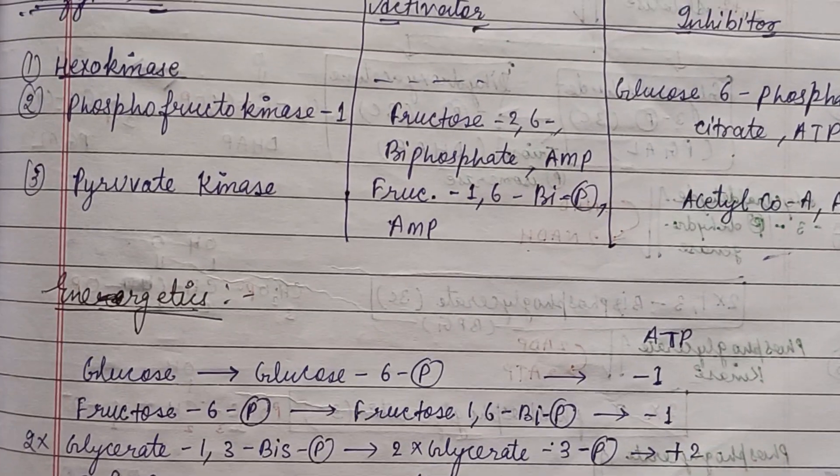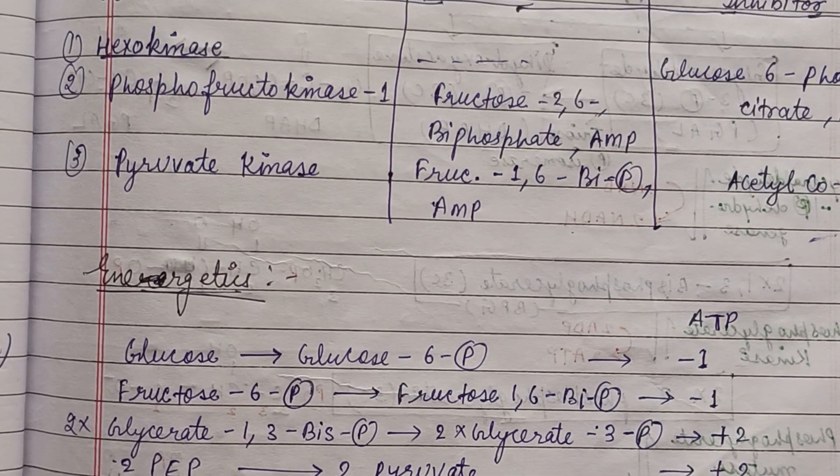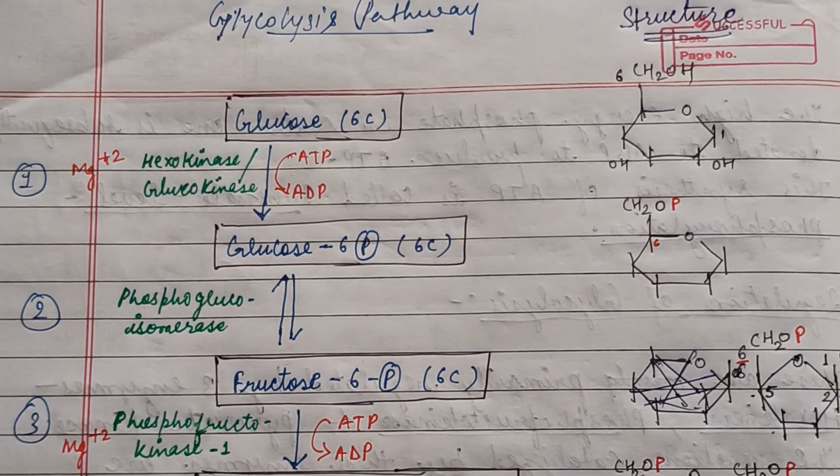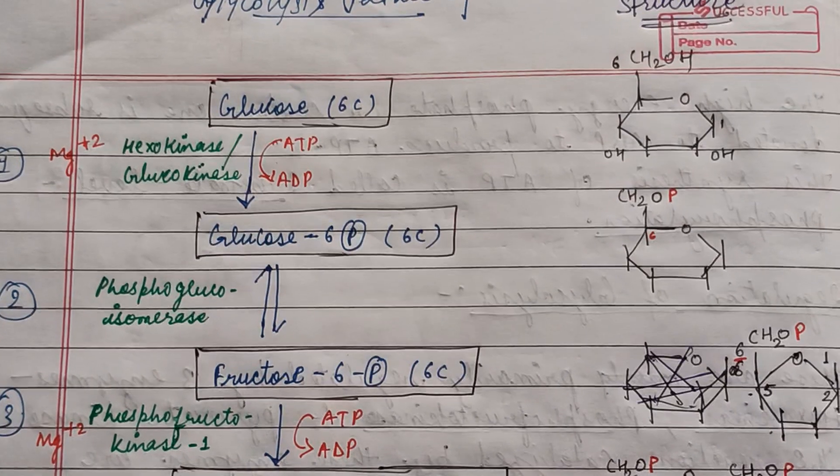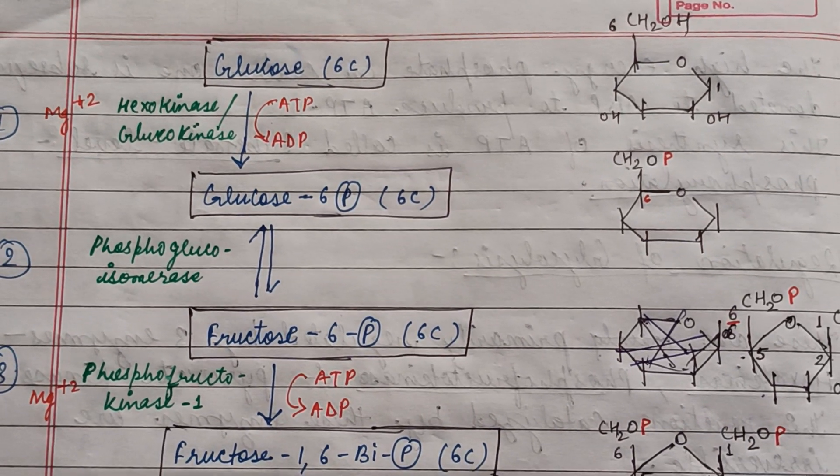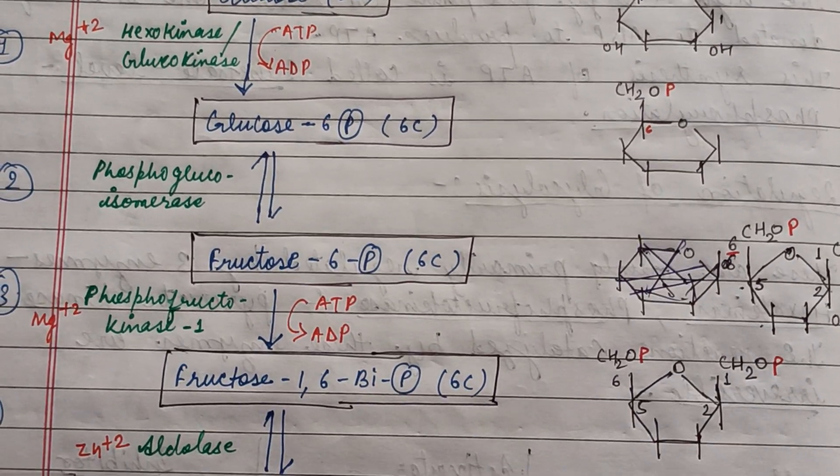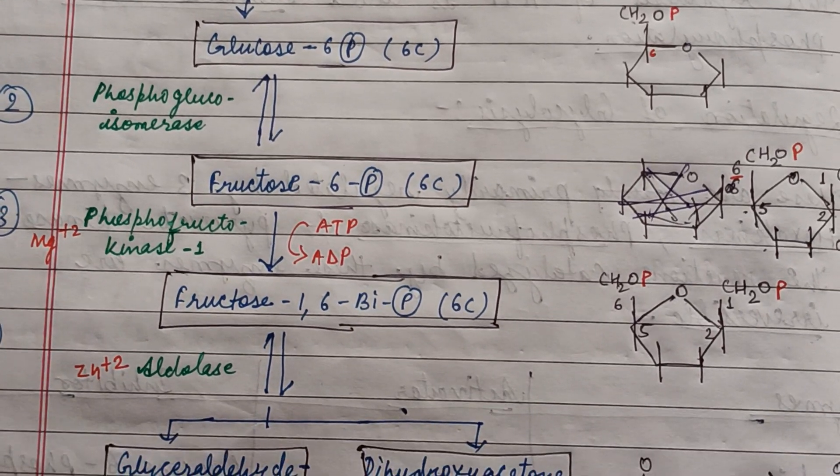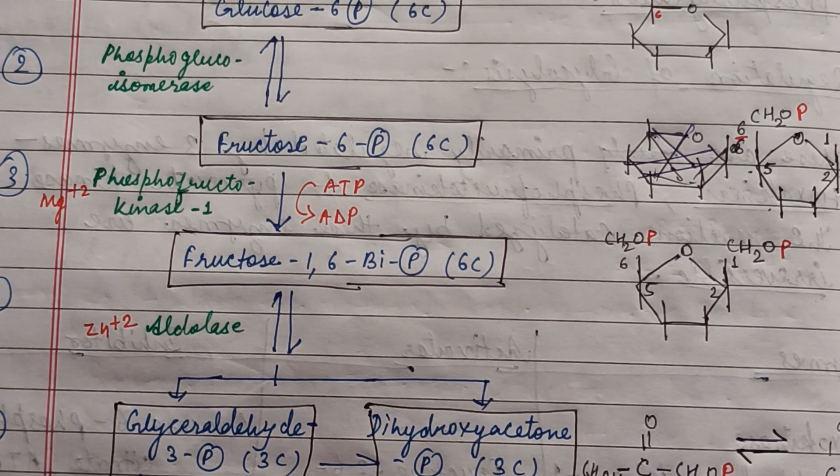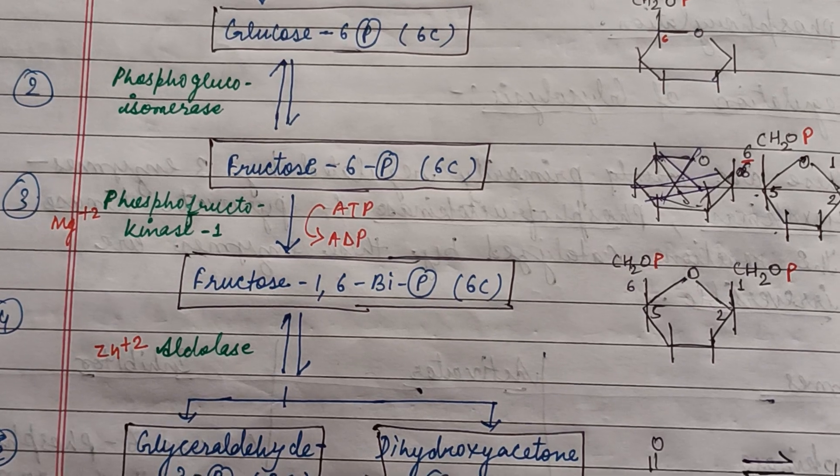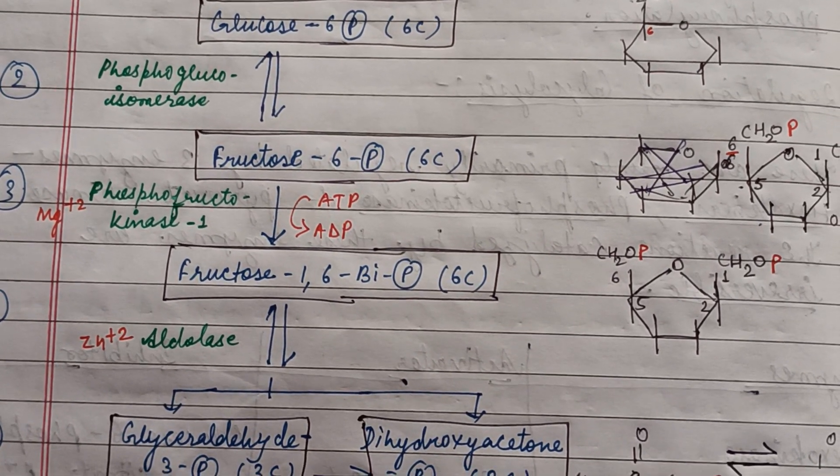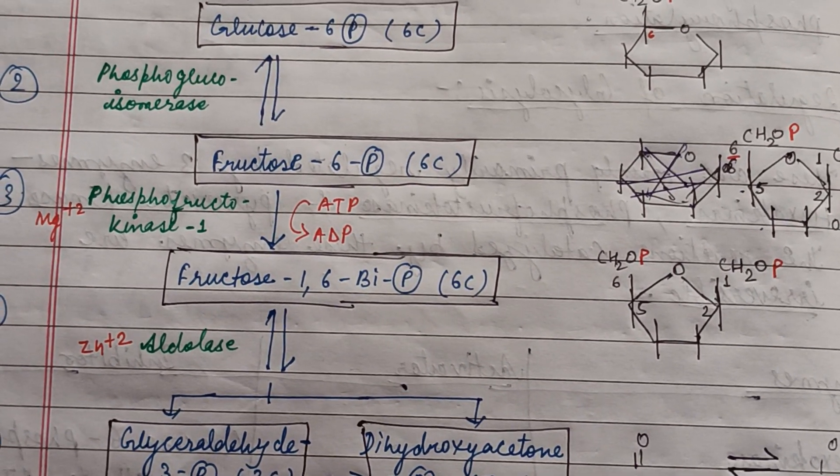We will see the energetics after the glycolysis cycle. This is the glycolysis pathway in which glucose is converted into glucose 6-phosphate and hexokinase is required for this reaction. Glucose 6-phosphate is converted into fructose 6-phosphate. We know that glucose and fructose are isomers to each other, so phosphoglucose isomerase is required for this reaction.